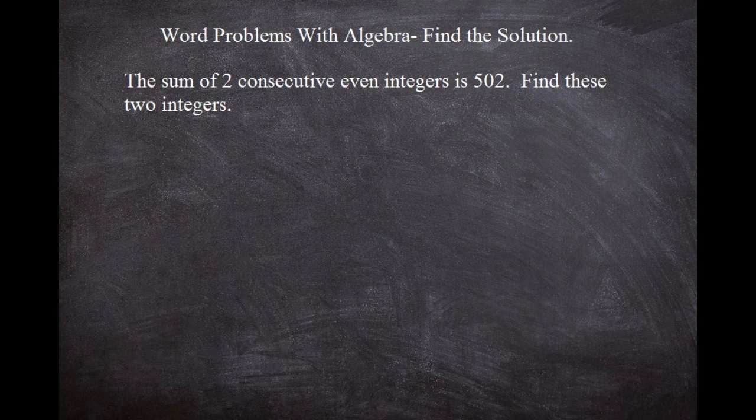So let's look at this problem here and go ahead and get into solving it. It says the sum of two consecutive even integers is 502. Find these two integers.